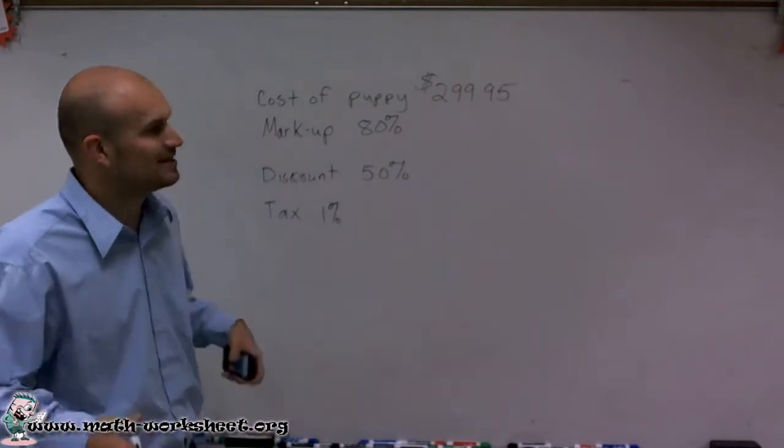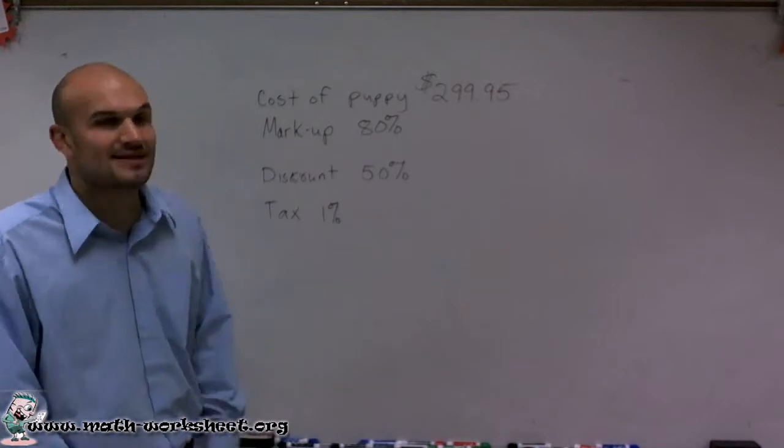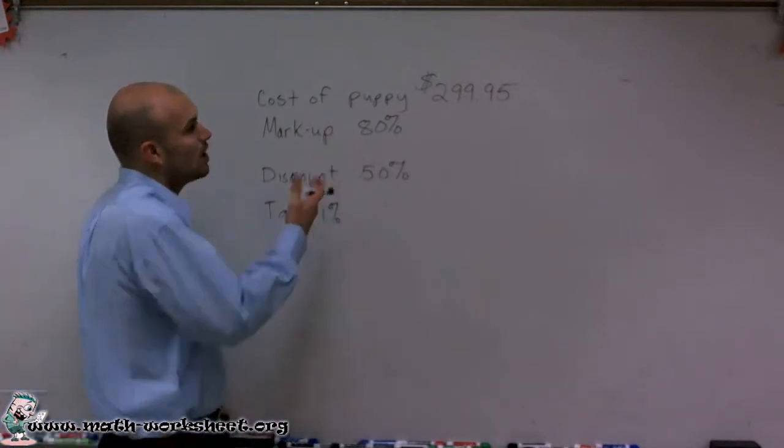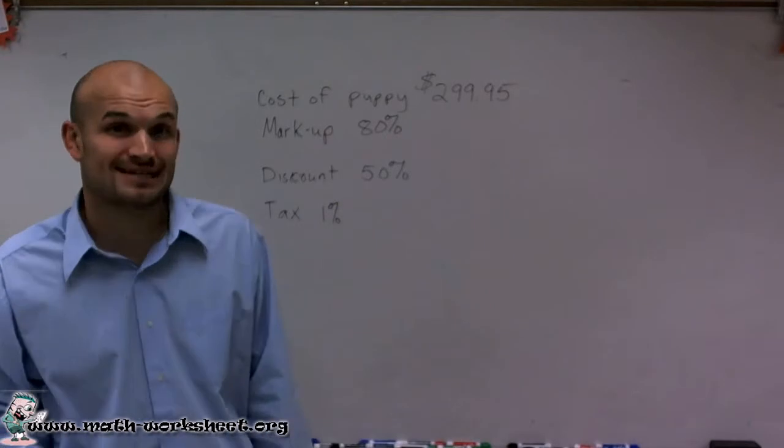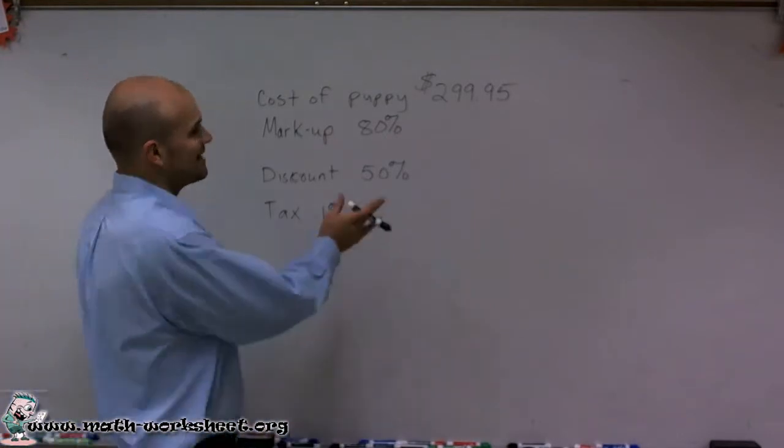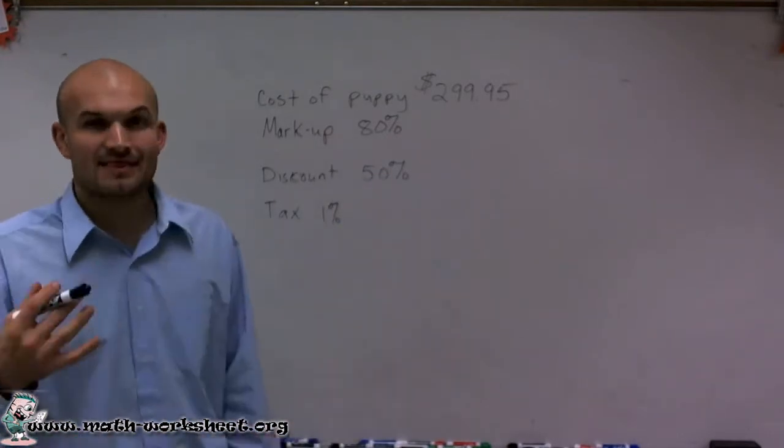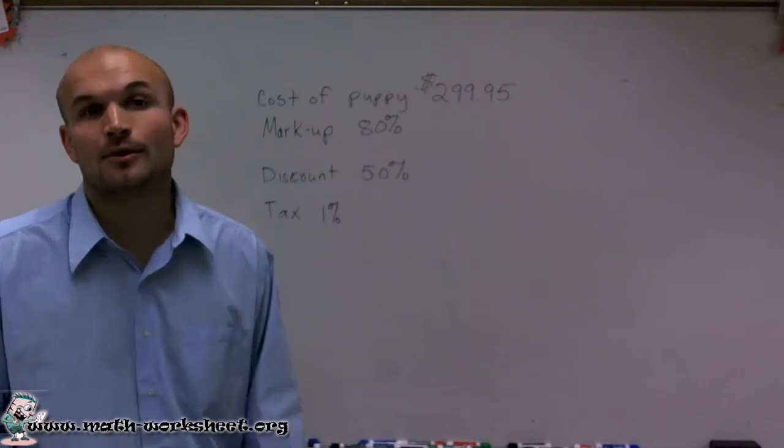So what we have is a cost of a puppy at $299.95. Then they're going to mark up that price 80%, but then we're going to have a discount of 50%, and then we've got to add a tax. What is going to be the final price of the puppy?